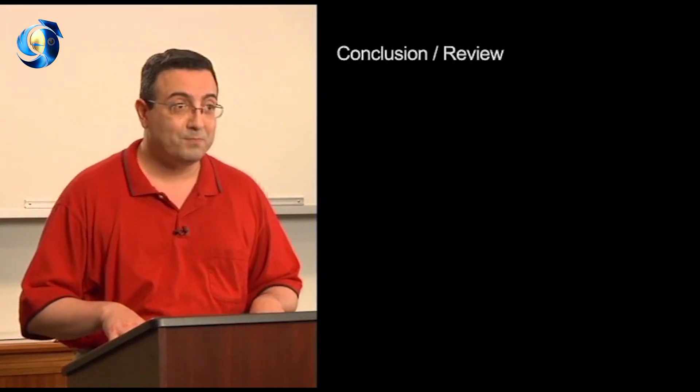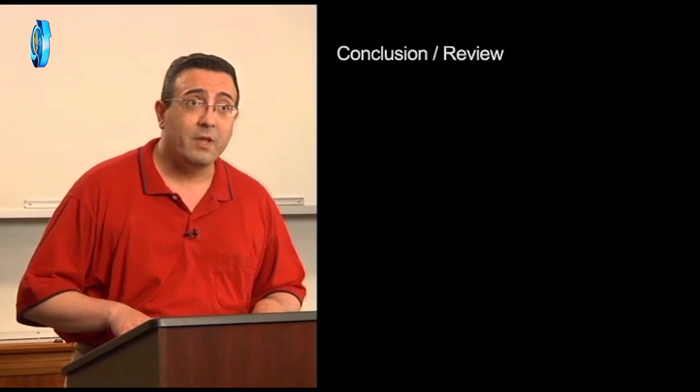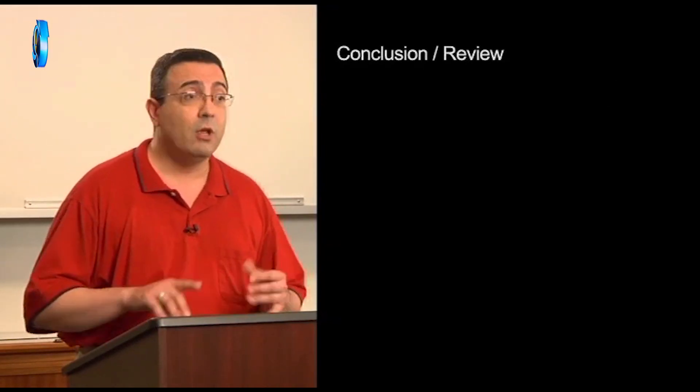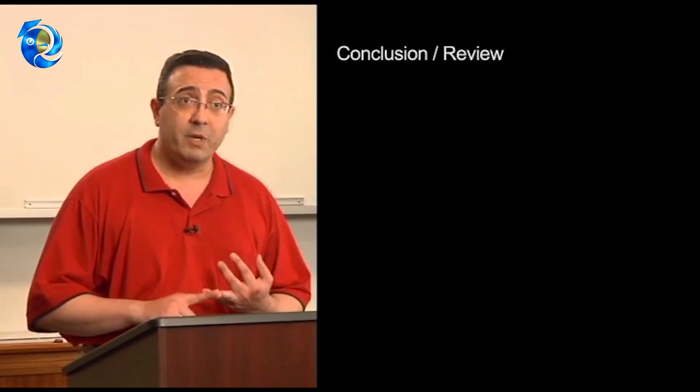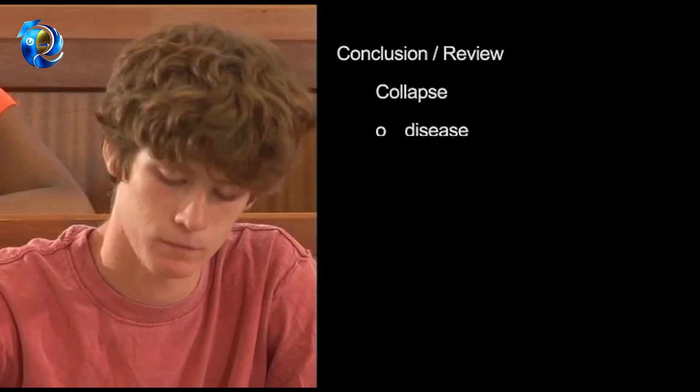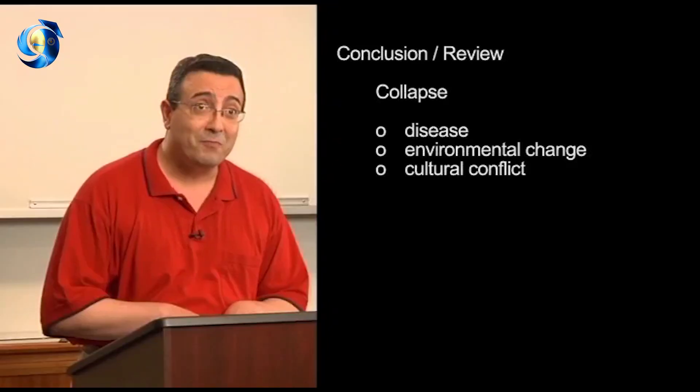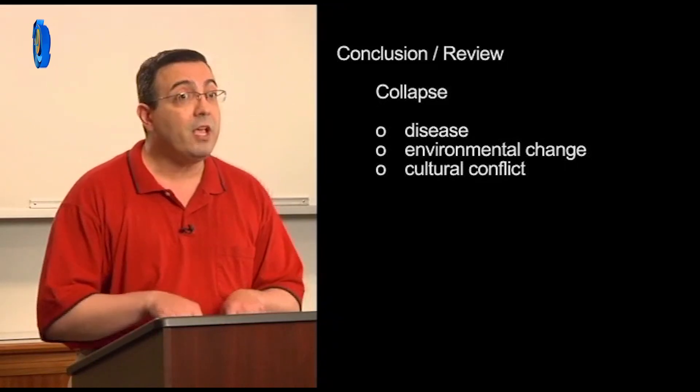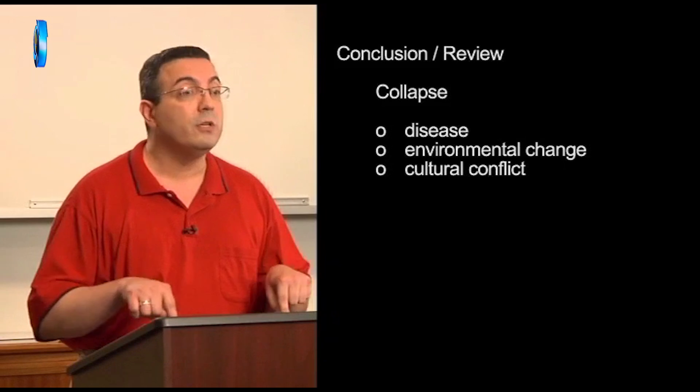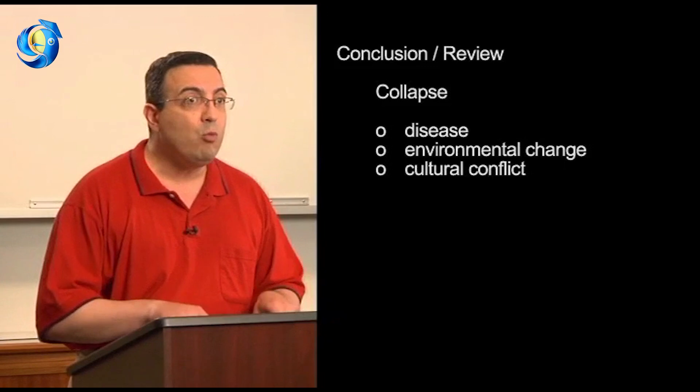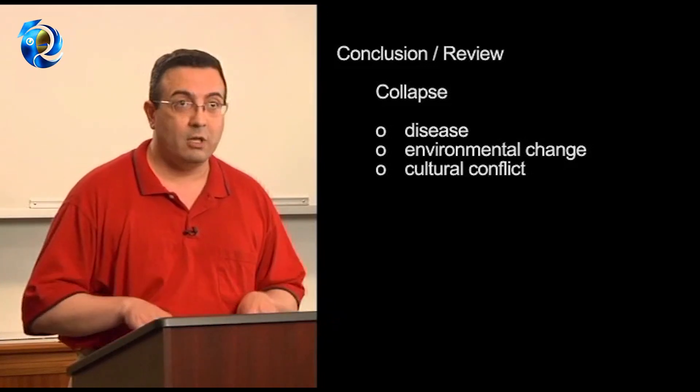Okay. So remember, historically, the three big reasons why societies have collapsed are disease, environmental change, and cultural conflict. For next time, I want you to think about these three causes of collapse. Then think about problems in the world today. Which societies are strong and which face potential collapse? I'll see you in the next class.